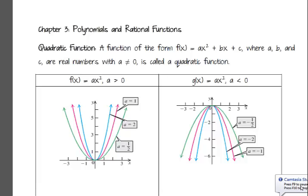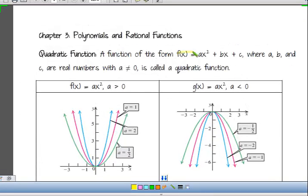We're going to start with the quadratic function, just kind of reviewing it, and even some of this looks at what we talked about in the first chapter with the stretching and shifting. When we talk about a quadratic function, it's one that's of the form AX squared plus BX plus C, where A, B, and C are real numbers, and A cannot equal zero. We have to have an X squared term as the highest power term.